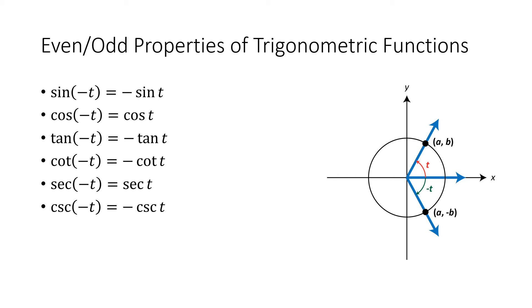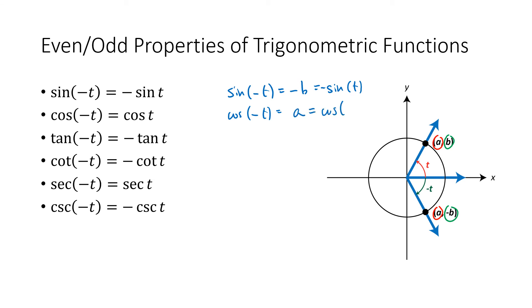We can see this by looking at the unit circle. If we have a rotation of t radians (taking t as positive), then -t is the corresponding clockwise rotation. There's a symmetry: both points have the same x-coordinate a, but different y-coordinates — the rotation by t gives (a, b), while the clockwise rotation gives (a, -b). So sine(-t) equals -b, which is the negative of sine(t), confirming sine is odd. But cosine(-t) equals a, the same as cosine(t), confirming cosine is even. Similarly we can verify the relationships for tangent, cotangent, secant, and cosecant.